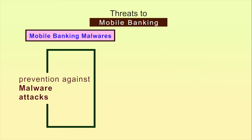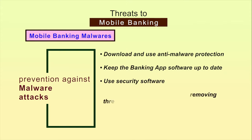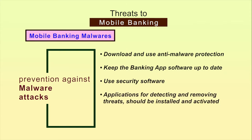For prevention against malware attacks, one must follow the following suggestions. Download and use anti-malware protection for the mobile phone or tablet device. Keep the banking app software up to date — using the latest version of the software allows receiving important stability and security fixes timely. Use security software: applications for detecting and removing threats including firewalls, virus and malware detection, and intrusion detection systems — mobile security solutions should be installed and activated. Reputed applications should only be downloaded onto the smartphone from the market after looking at the developer's name, reviews and star ratings, and checking the permissions that the application requests, ensuring that the requests match the features provided by that application.